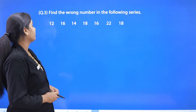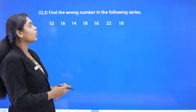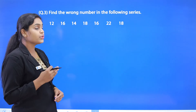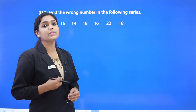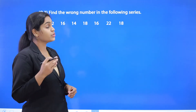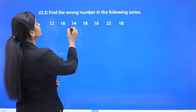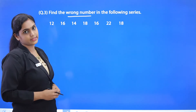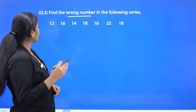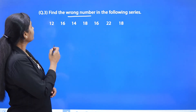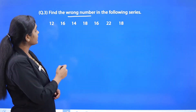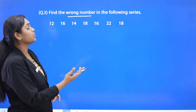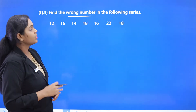Question number 3: find the wrong number in the following series. Unlike the previous two questions where we found missing numbers, here we must identify the wrong number. The series is: 12, 16, 14, 18, 16, 22, and 18.